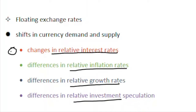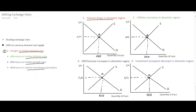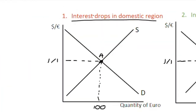Starting with factor number one — interest rates — we'll look at our first diagram on the right hand side. The example we're going to look at is the interest rate dropping in the domestic region. The domestic region is the euro area with the euro as its currency, and the foreign area is the US with the dollar. In our diagram, equilibrium has been reached between demand and supply for the quantity of euros, giving us an exchange rate of one euro to one dollar at point A.